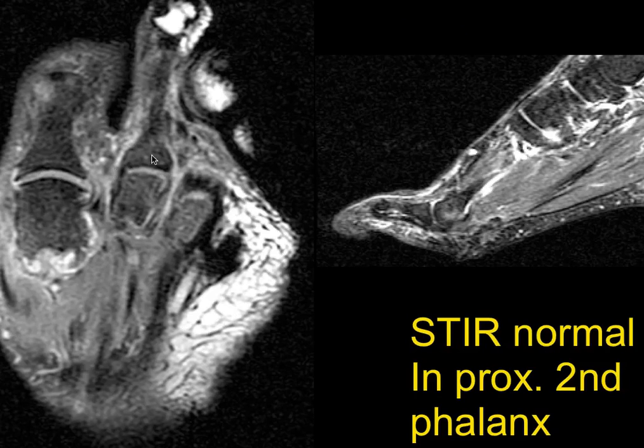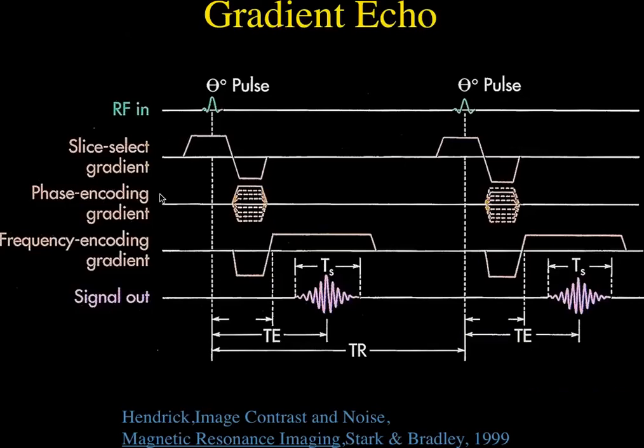This shows a STIR image where you can see increased signal intensity within the marrow space with suppression of the fat. And you can also wait longer until water goes to zero — that would give a FLAIR image.